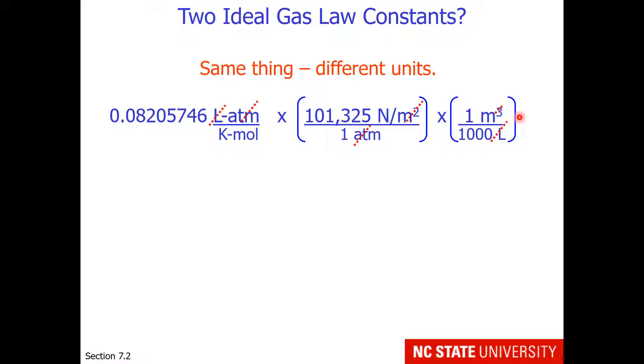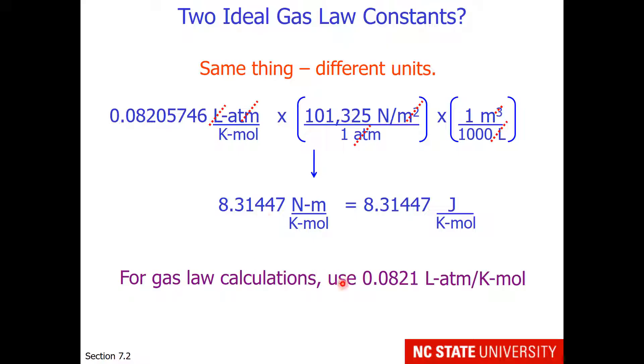notice what happens when my units cancel out. On the top, I'm left with a newton meter per Kelvin mole, and a force of 1 newton moved through a distance of 1 meter is a joule, and you notice how with these conversion factors, we've now moved to the 8.314 value that I'm using to estimate thermal energy. So for gas law calculations, use the typical units that gases come in and use the 0.0821 value. For thermal energy calculations, use the 8.314 joules per Kelvin mole.